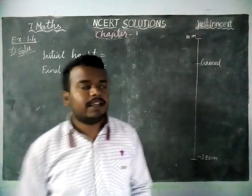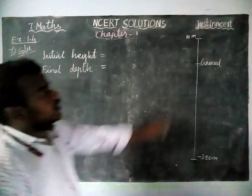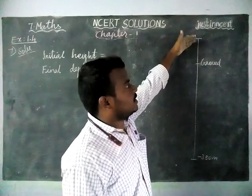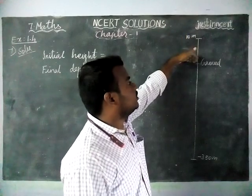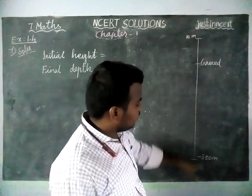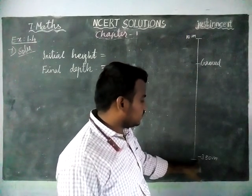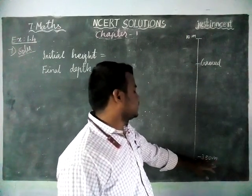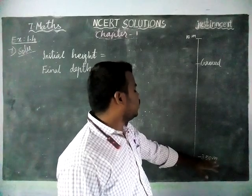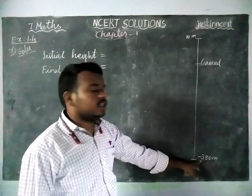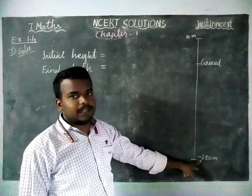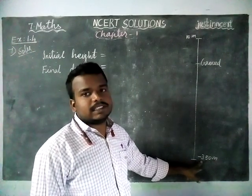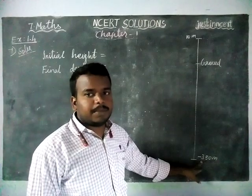Here an elevator is started from 10 meters above the ground level and it started to descend into the mine, reaching minus 350 meters. They are asking how long it will take to reach minus 350 meters, and the speed of this elevator is 6 meters per minute.